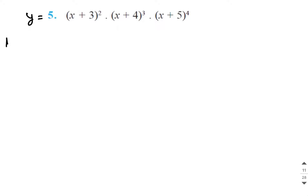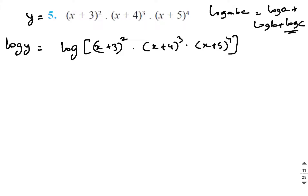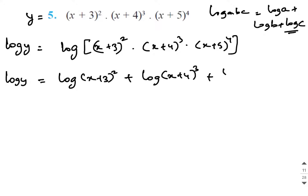Taking log on both the sides, we get log y is equal to log of (x plus 3) the whole square into (x plus 4) the whole cube into (x plus 5) the whole power 4. We know that log(abc) is equal to log a plus log b plus log c. Applying this rule on the right hand side, we get log y equal to log of (x plus 3) the whole square plus log of (x plus 4) the whole cube plus log of (x plus 5) the whole power 4.